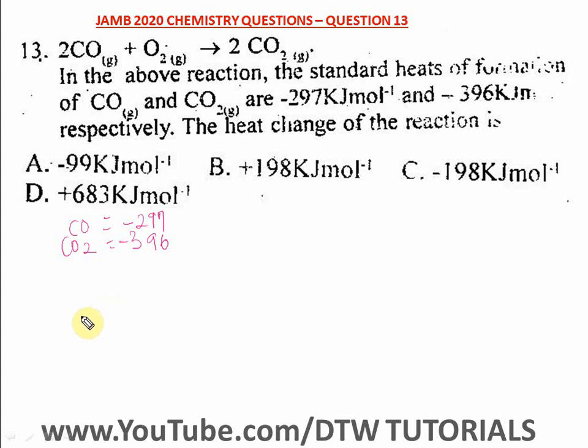Now see that we have two moles here, so you have to multiply this. Two times -297 to get the standard heat of formation, because we have two moles in the reaction. So two times -297 gives us -594 kJ/mol.